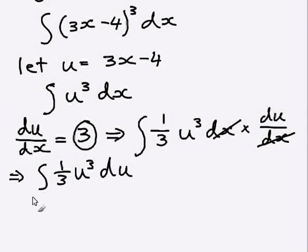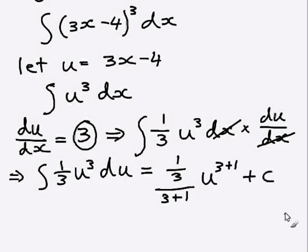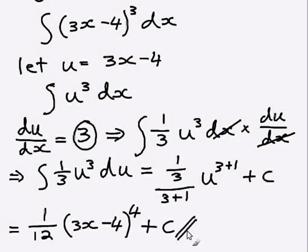So we have a function with respect to u, and we also have a du at the end of the integral. Now we can go ahead and work this out just like we would a normal integral. We take the 1 third and divide it by the power plus 1. So we have 1 third divided by 3 plus 1, multiplied by u, and we increase the power by 1, so it becomes 3 plus 1. And don't forget we need the constant of integration c. So what's a third divided by 4? A third divided by 4 is a twelfth — 1 twelfth. We have u to the power 4, and instead of u I'm going to write what u actually equals, which is 3x minus 4, to the power 4. And then don't forget about the constant of integration. And that's your integral answer.